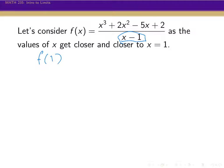The value, if we tried to plug 1 into this function, does not exist. 1 is not in the domain for this rational function. But every other real value of x is — we can plug anything else in for x, except for 1, and we're not going to be dividing by 0, so that's completely legal.